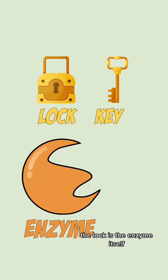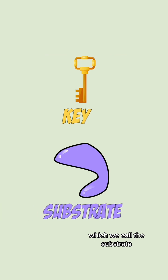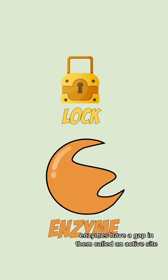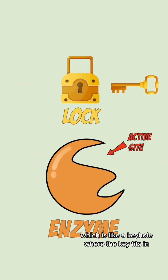The lock is the enzyme itself and the key is the molecule that's being broken down which we call the substrate. Enzymes have a gap in them called an active site which is like a keyhole where the key fits in.